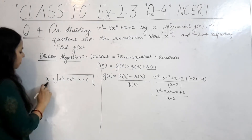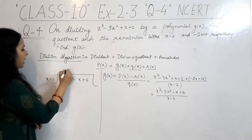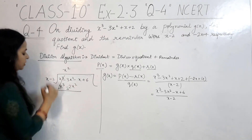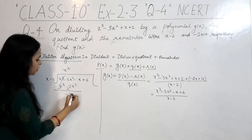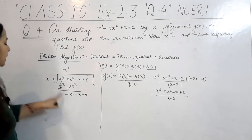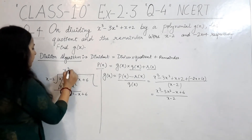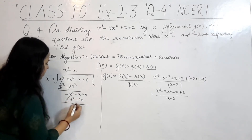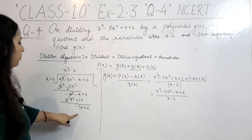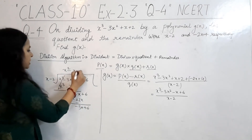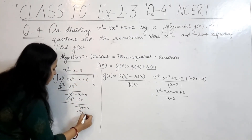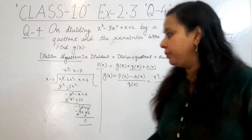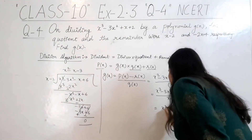First, what multiplied by x gives x cubed? Obviously x squared. So x squared times x gives x cubed, and x squared times minus 2 gives minus 2x squared. After changing sign, minus 3 plus 2 gives minus x squared. Bring down to get minus x squared minus x plus 6. Then minus x times x gives minus x squared, and minus x times minus 2 gives plus 2x. After sign change, we get minus 3x plus 6. Finally, minus 3 times x gives minus 3x, and minus 3 times minus 2 gives plus 6 — completely nullified.